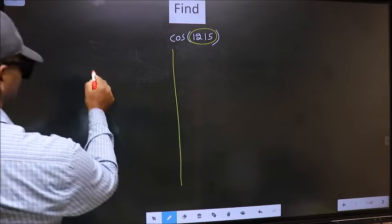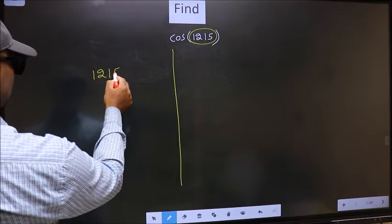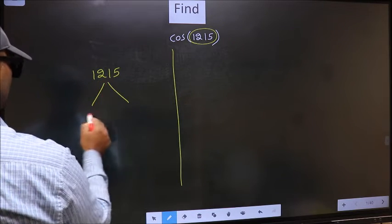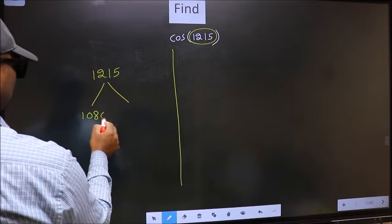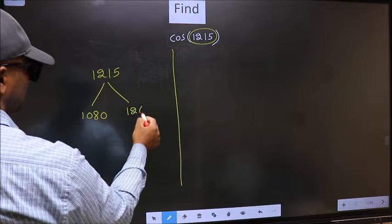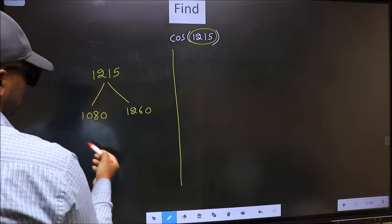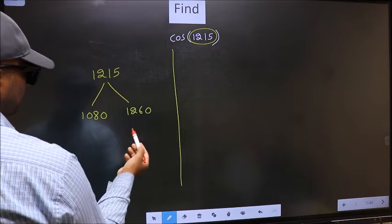1215 lies between 1080 and 1260. This is 180 into 6, this is 180 into 7. Between these two numbers, 1215 lies.